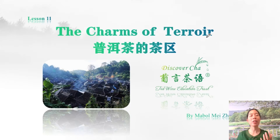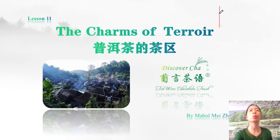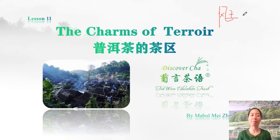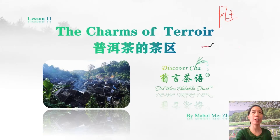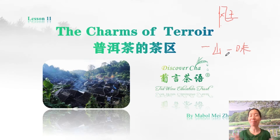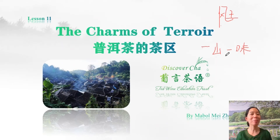Terroir, literally translated into Chinese, is fengtu. Fengtu means wind and soil — it means the environment, climate, and everything. Yi Shan Yi Wei means that each mountain has its own style. In fact, each village within the same mountain can be different. In this lesson, we are going to have a better understanding of Puerh by learning the styles of each region.